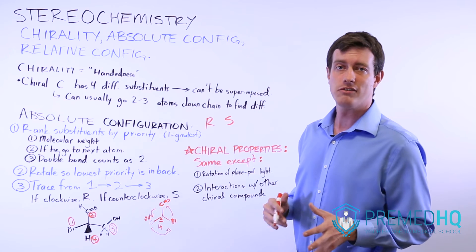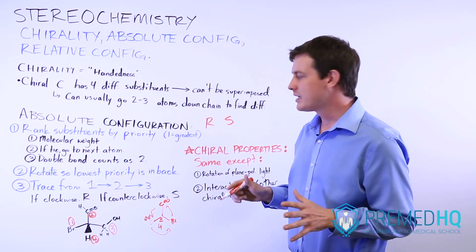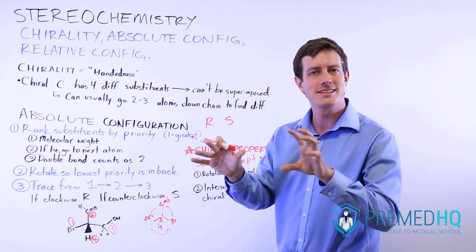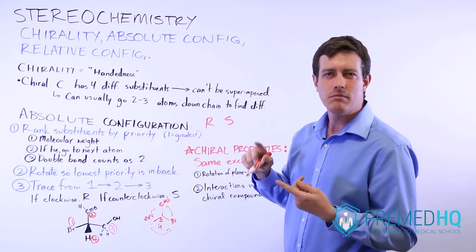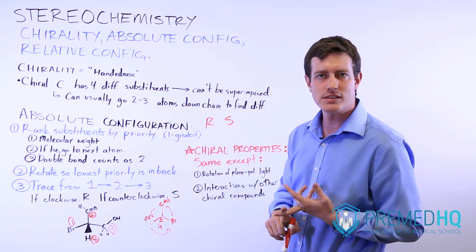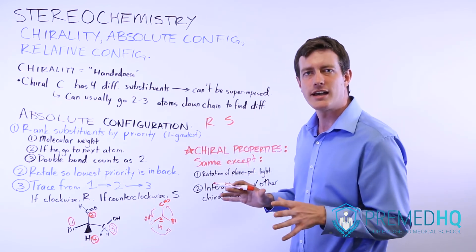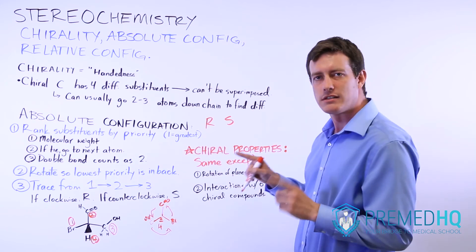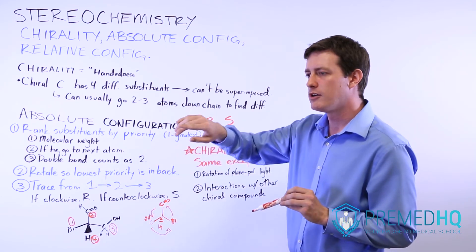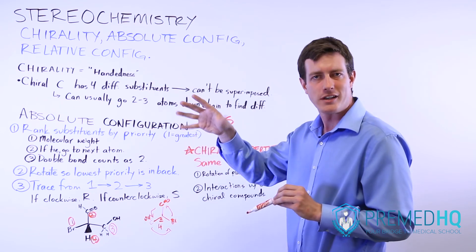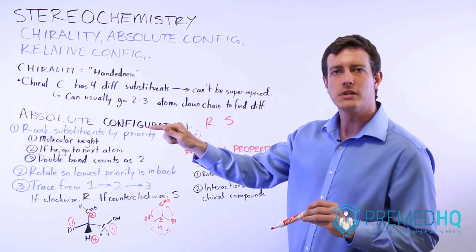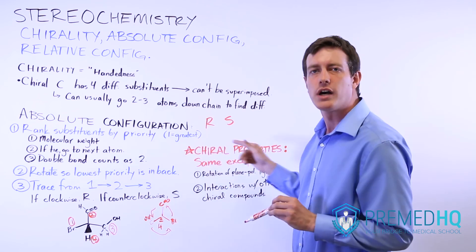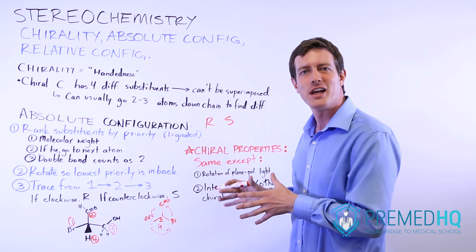One other thing to be aware of with chiral compounds is that they are very similar. Because they have the same substituents and the same types of bonds, a chiral compound and its opposite-handed enantiomer will have the same boiling point, the same melting point, and the same molecular weight. But they differ in two very important regards: one is that they will rotate plane-polarized light differently — the R form might rotate it clockwise, and the S form would rotate it in the opposite direction.